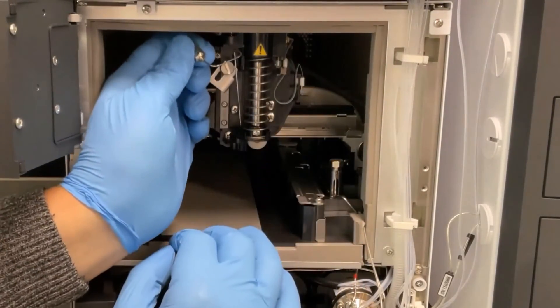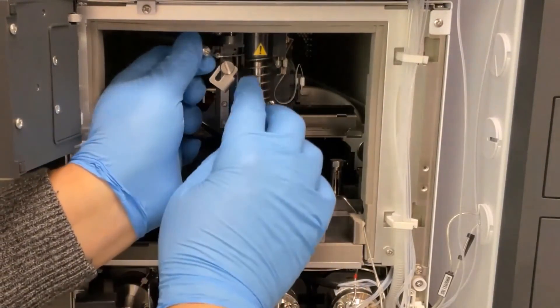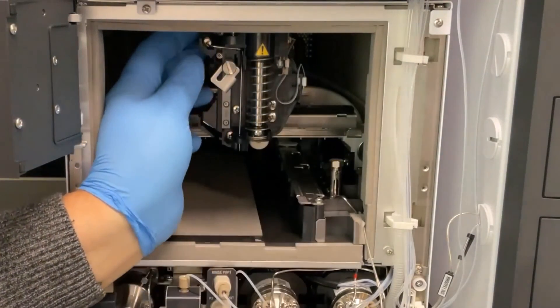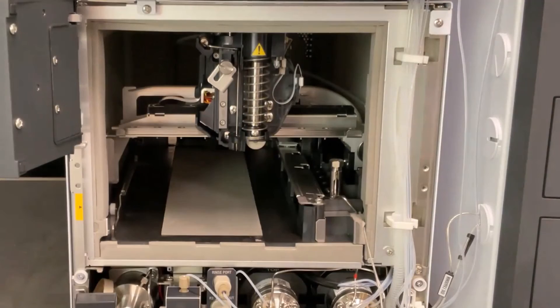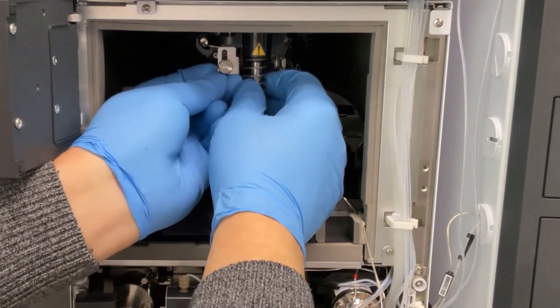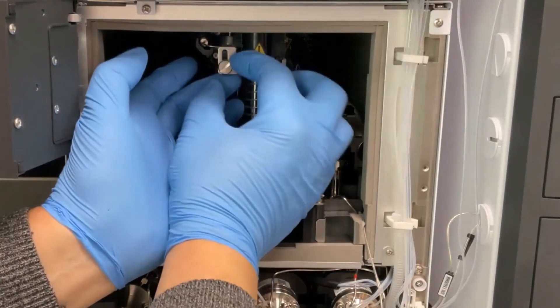Then turn the needle 90 degrees until it is vertical and insert it into the needle holder. Slide the fastening plate all the way to the top and tighten it with the knurled screw.